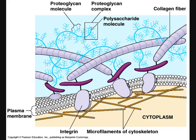The extracellular matrix is a network of nonliving tissue that provides support to the cell. The role of the ECM in animals is similar to the cell wall of plants — it provides structure and support to the cell as well as providing a pathway for communication.